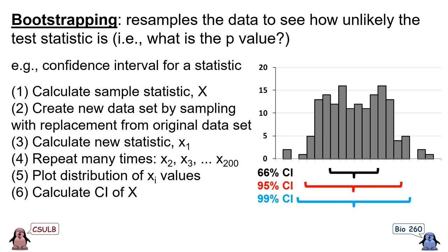First, we calculate our sample statistic. Second, we create a new dataset by sampling with replacement from our original dataset. Third, we calculate our sample statistic again from this new dataset. Fourth, we repeat step 3 many times. Fifth, we plot the distribution of the sample statistic values. Sixth, now that we have the distribution of values from our bootstrap datasets, we can calculate a confidence interval by identifying regions within that distribution that contain certain proportions of the test statistic values.